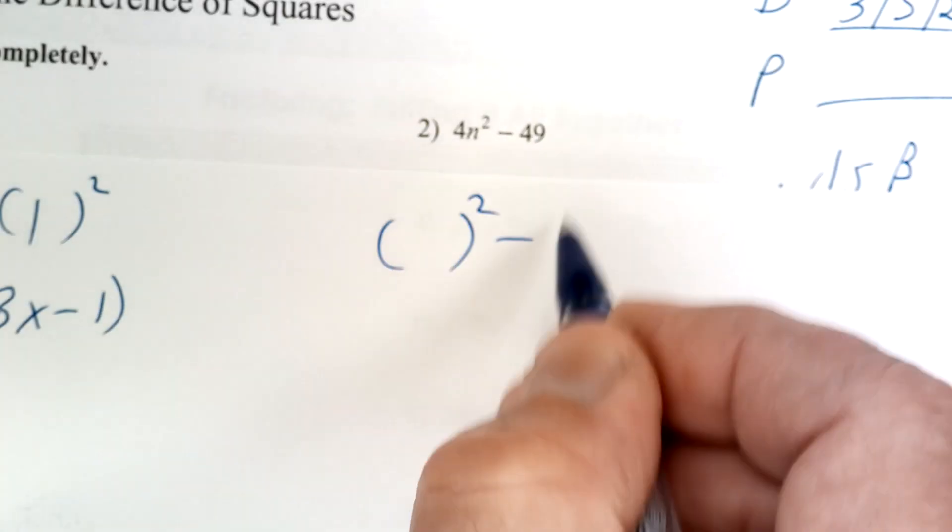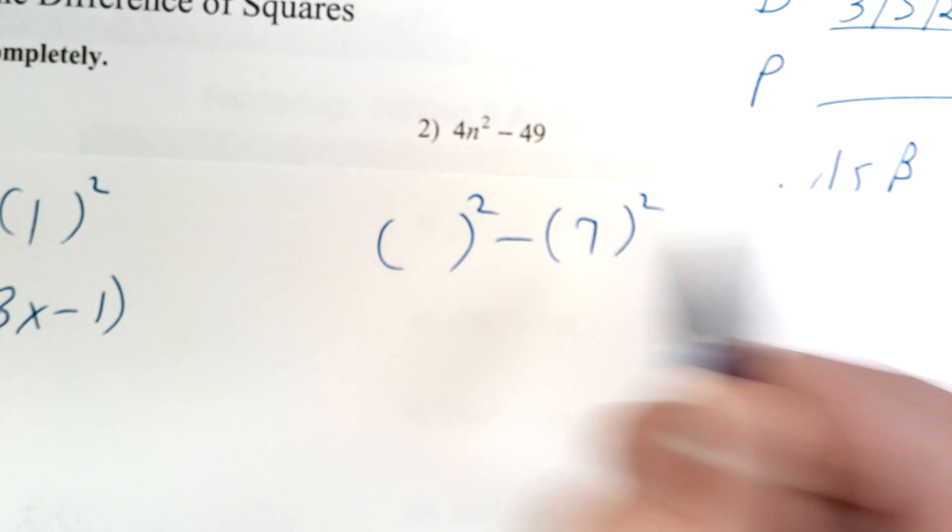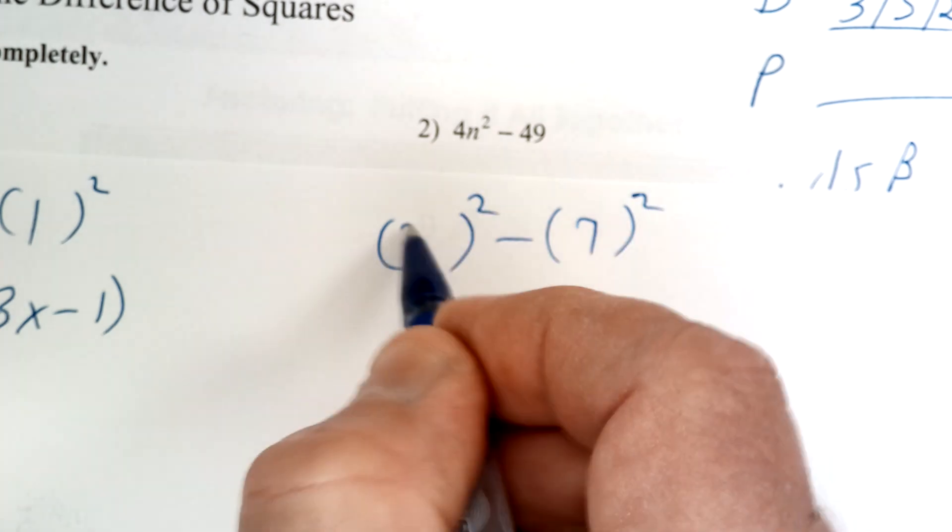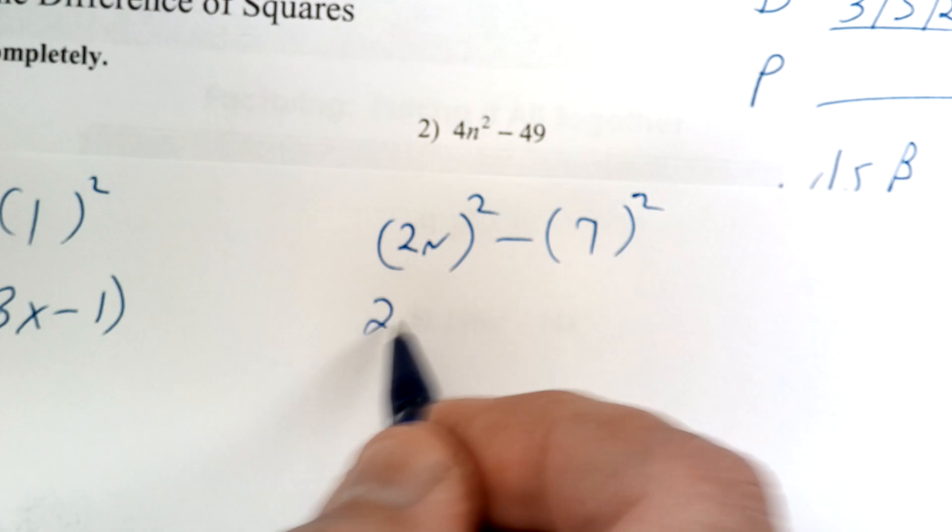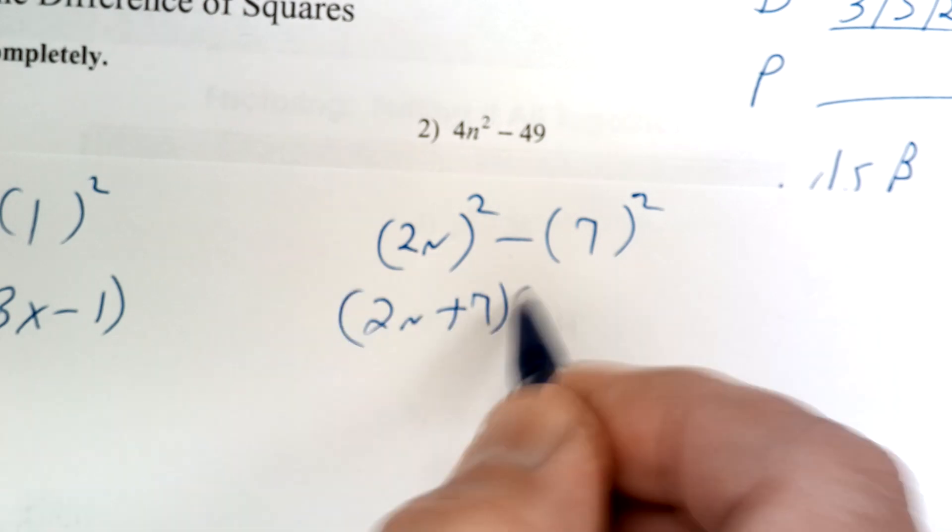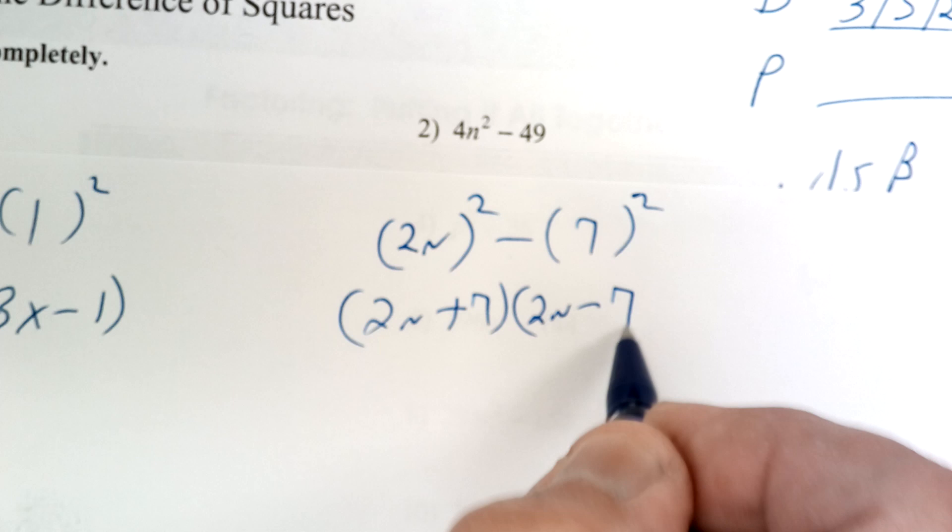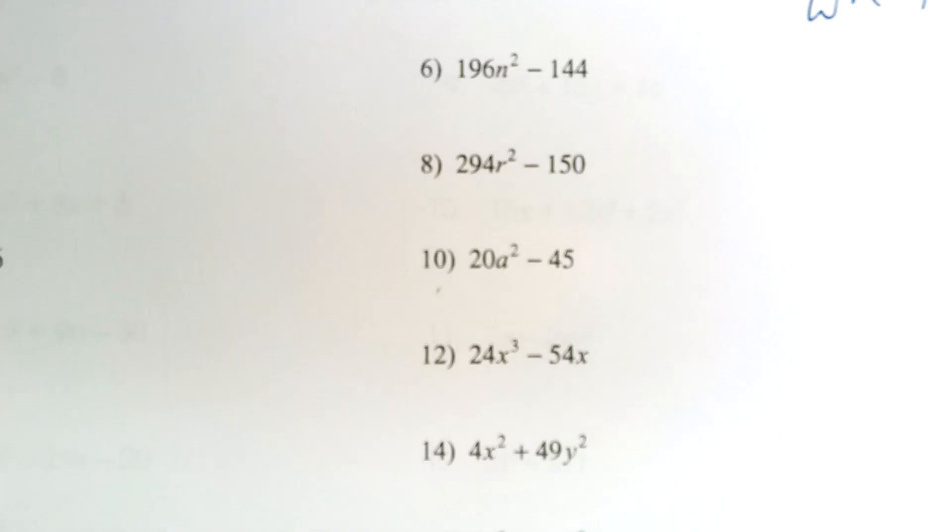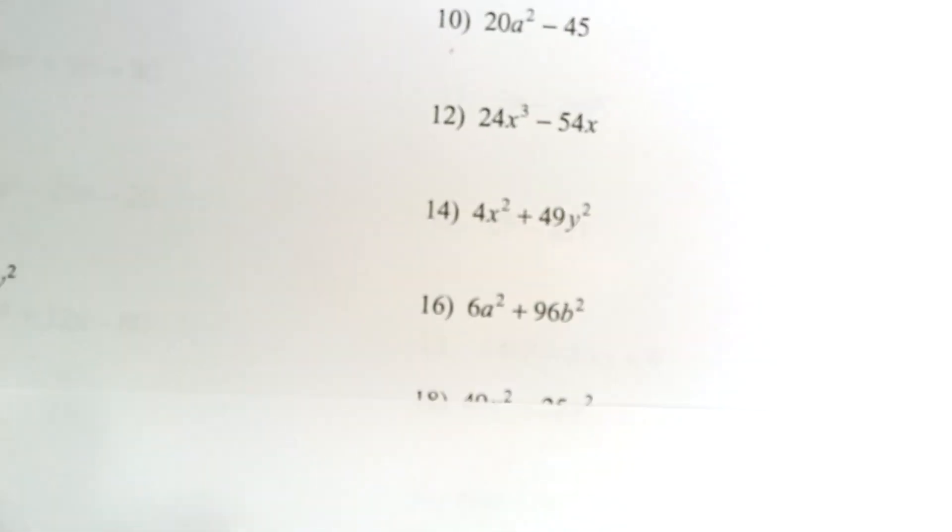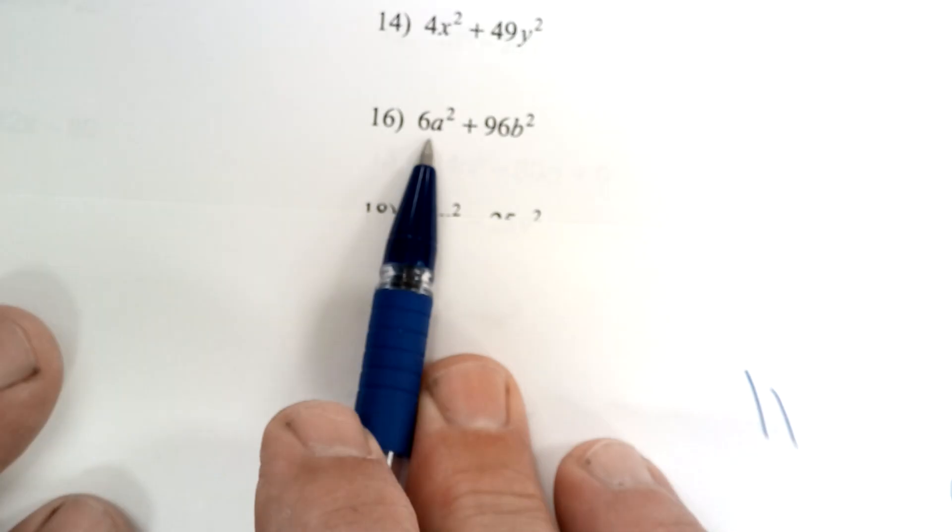This one right here is going to be 7 times 7, and this one's going to be 2 times 2. So it's going to be (2n + 7) and (2n - 7). That's called the difference of two squares. Now when you get down here, you might have to factor something out. Like this one here, you might have to take a 3 out.